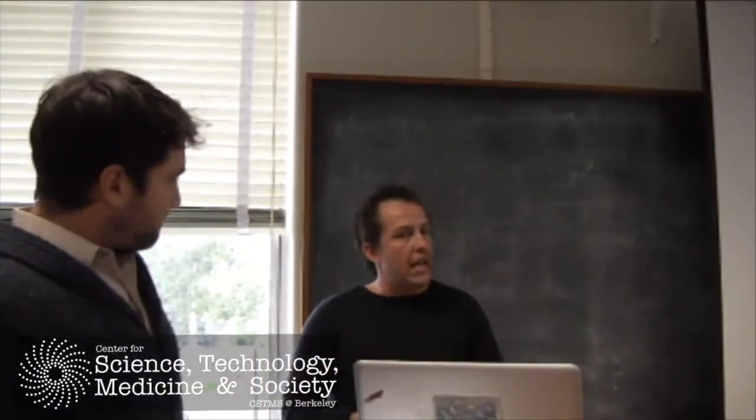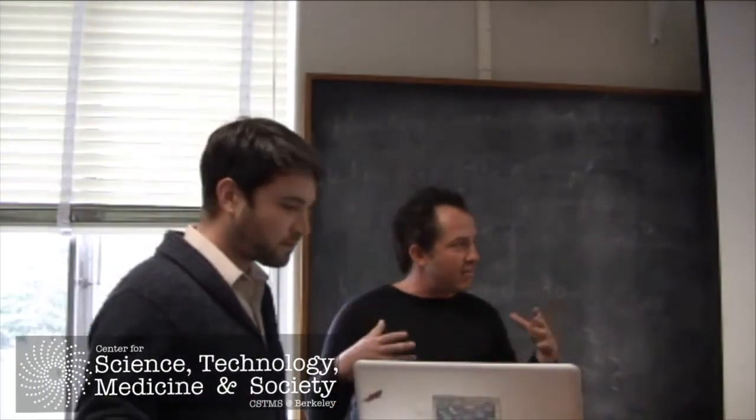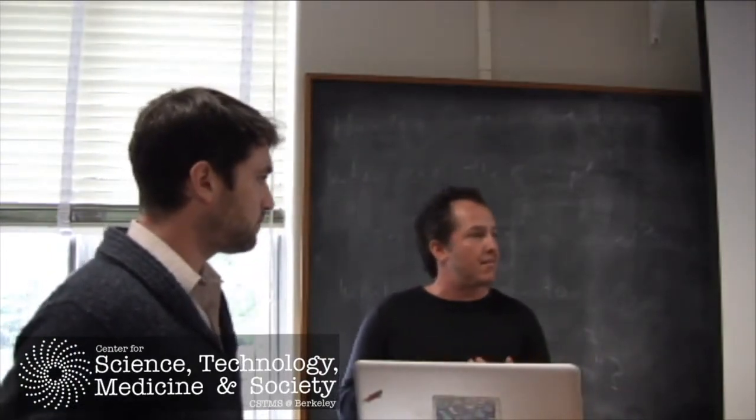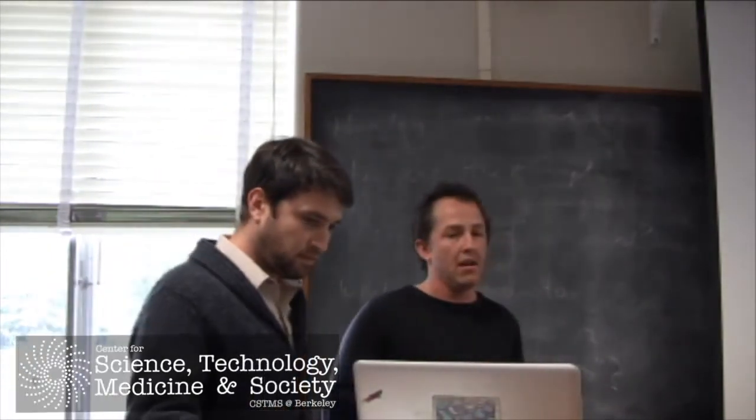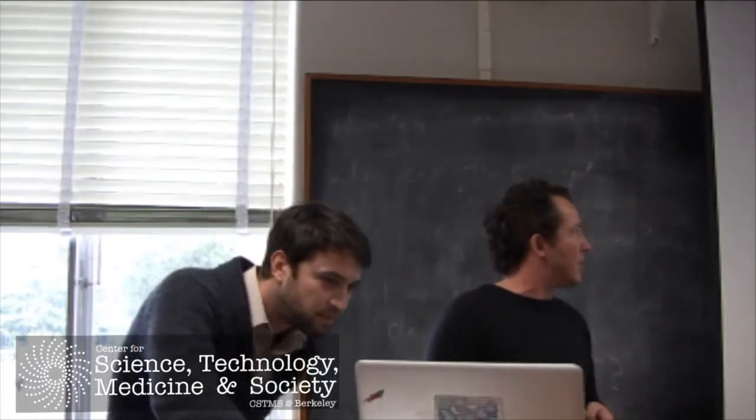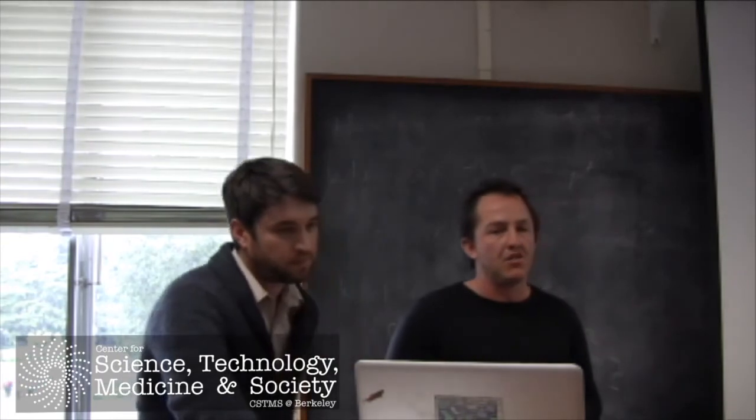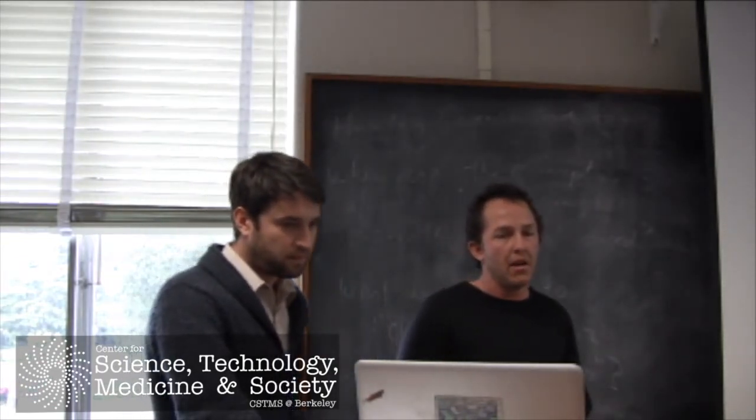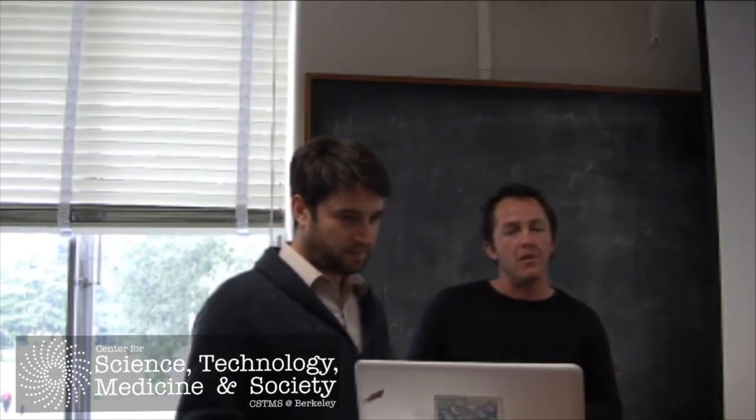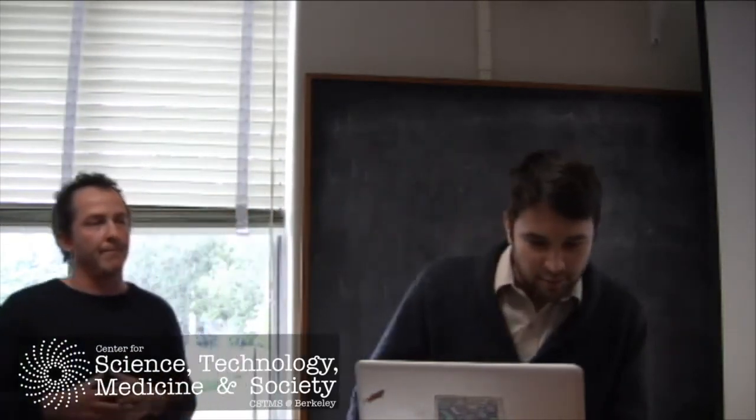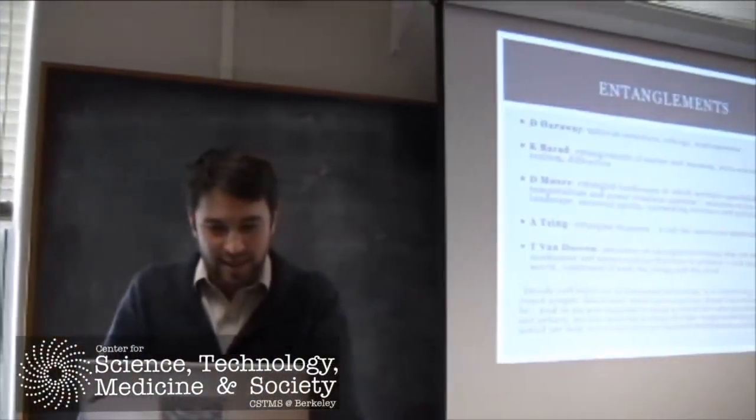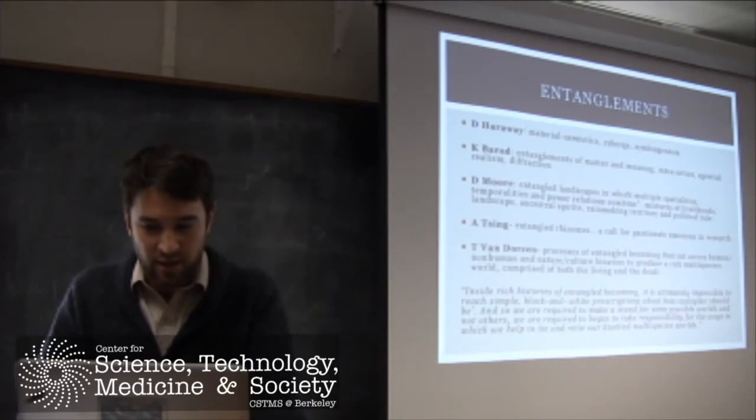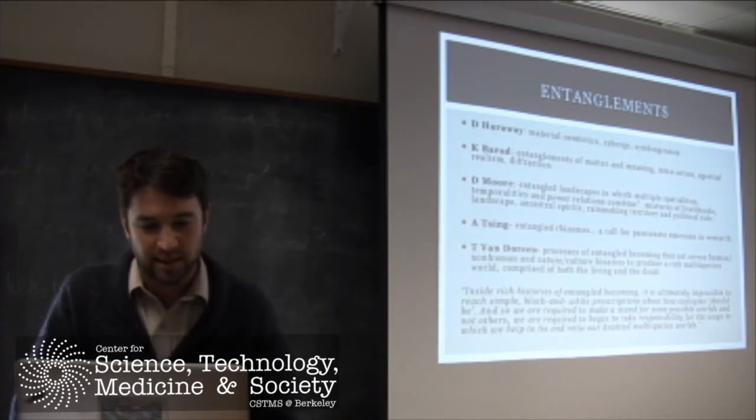In conclusion, we're very interested. We think we've traced some of the entanglements that are emerging in all of these cases between science, between local knowledge, between human and non-human. These are some of the theories that we find really useful in addressing these entanglements, which we'll explore further. We just want to close with a quote from Van Dooren that kind of addresses these entanglements nicely. Inside rich histories of entangled becoming, it is ultimately impossible to reach simple black-and-white prescriptions about how ecologies should be. We are required to make a stand for some possible worlds and not others. We are required to begin to take responsibility for the ways in which we help to tie and retie our knotted multi-species worlds. Thank you.